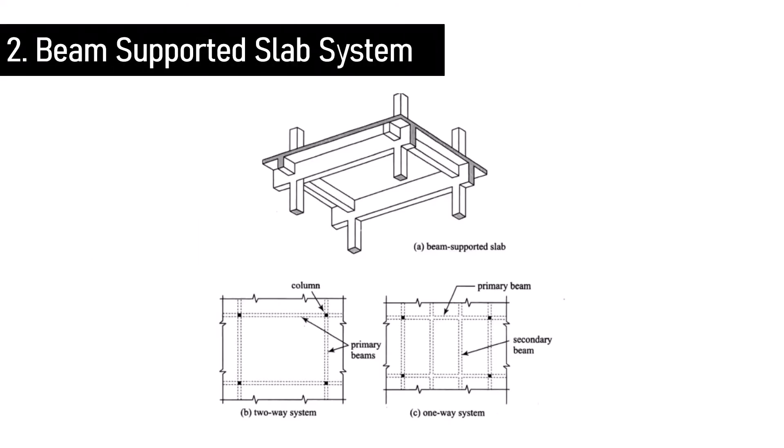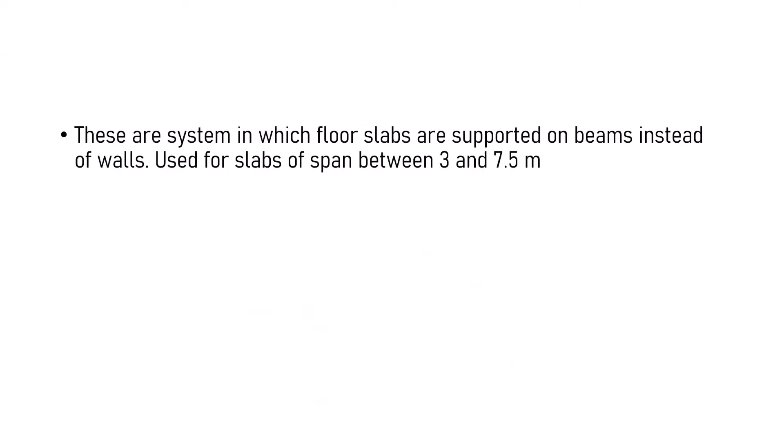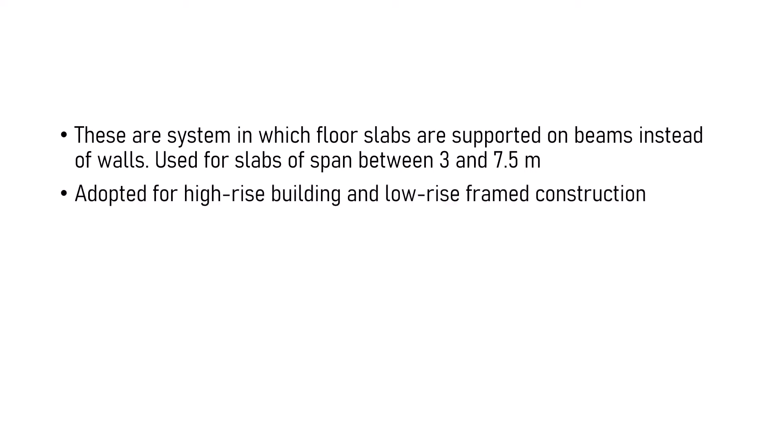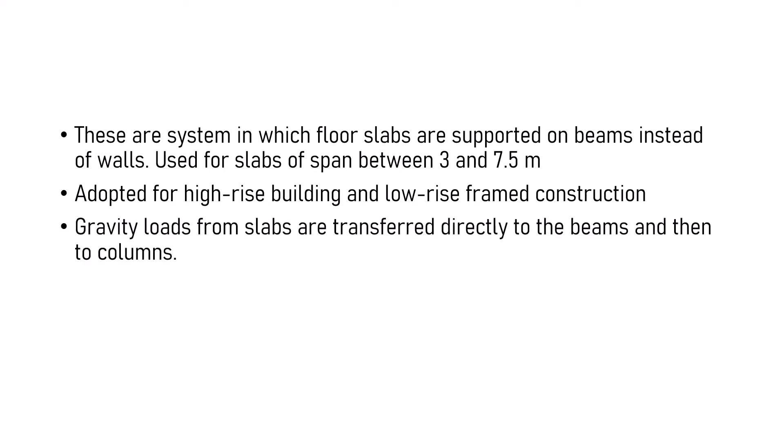Beam-supported slab system. These are systems in which floor slabs are supported on beams instead of walls. During construction, the slabs are constructed monolithically with beams in a grid pattern. It is used for slabs of span between 3 and 7.5 meters, and is adopted for high-rise buildings and low-rise frame construction. Gravity loads from the slabs are transferred directly to the beams and then to the columns.